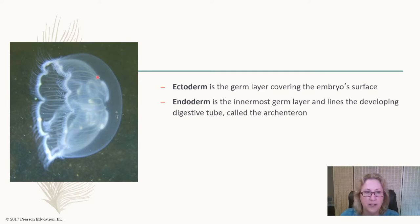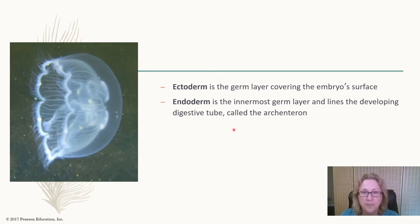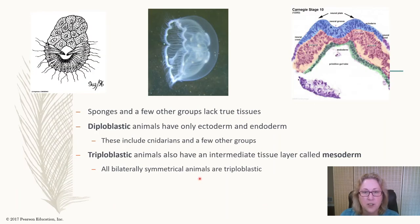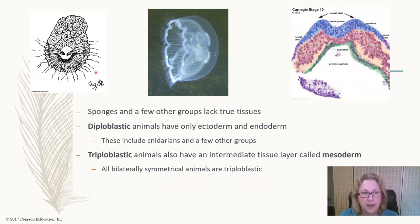Jellyfish and ctenophores don't have a mesoderm. The endoderm forms the gut during embryonic development and gastrulation, and the ectoderm forms the outer layer. These animals would be diploblastic — meaning they have two layers in the embryo.